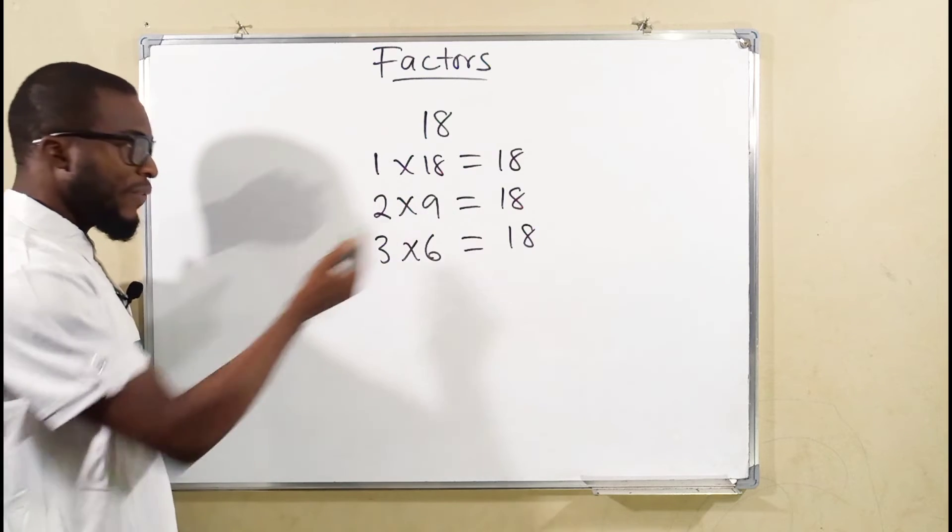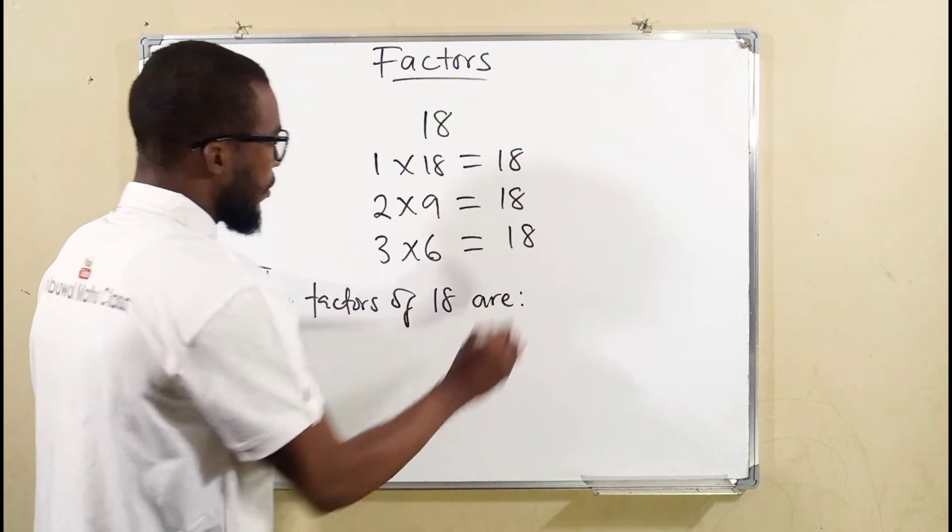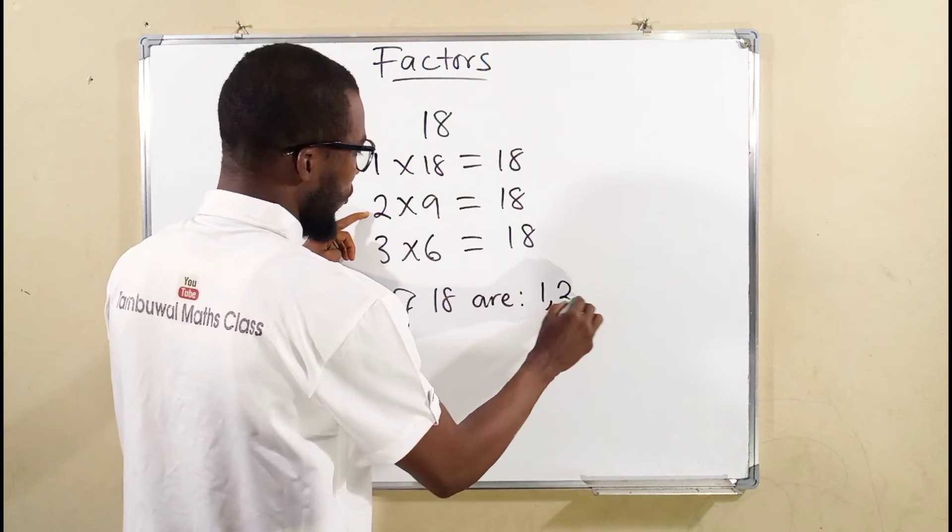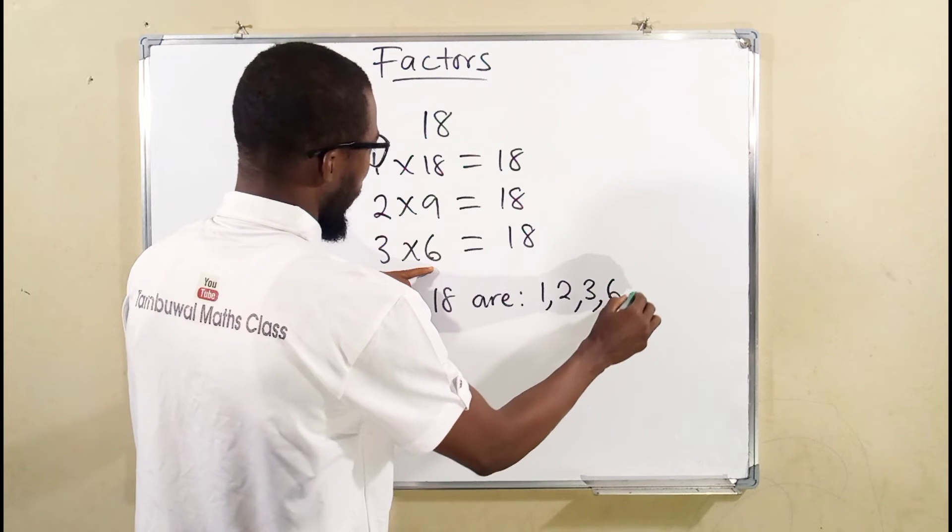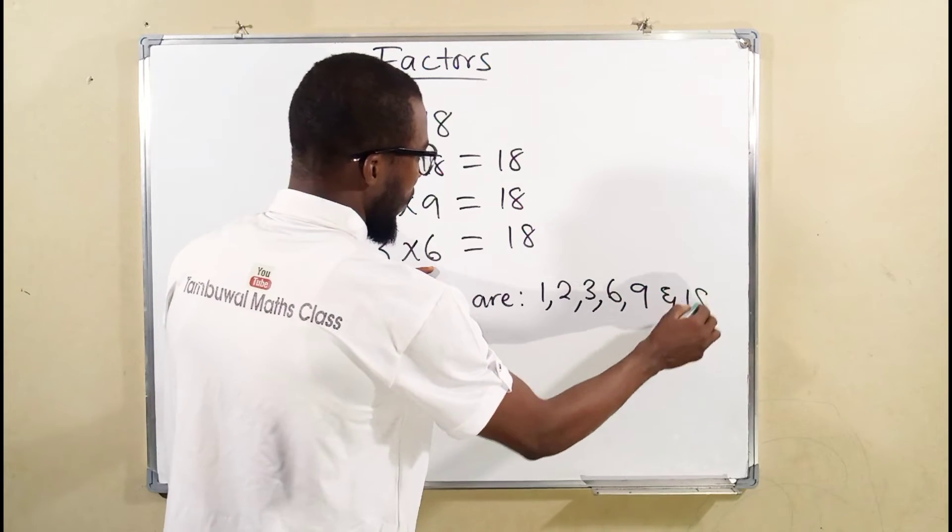Therefore, the factors of 18 are: 1, 2, 3, 6, 9, and 18.